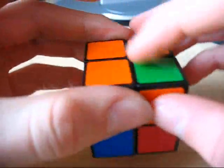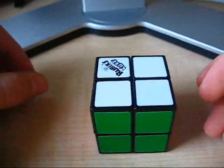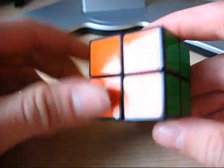And now all your corners should be in the right spots. Okay, so if you followed that tutorial, you should have solved your two-by-two Rubik's. Let's go.